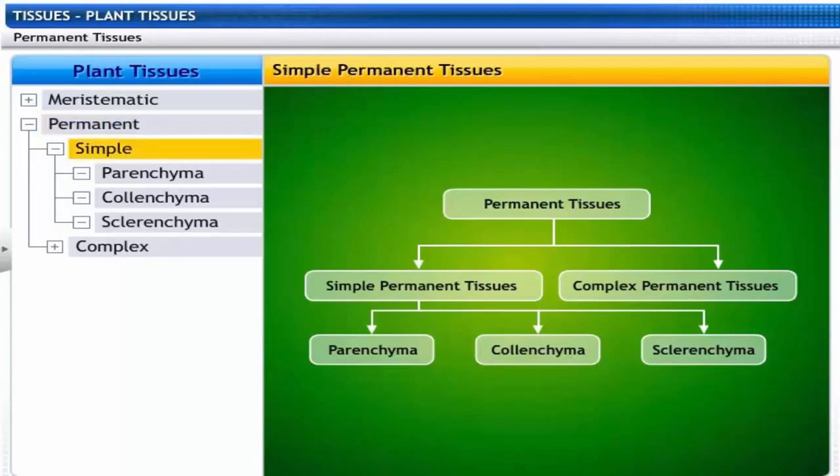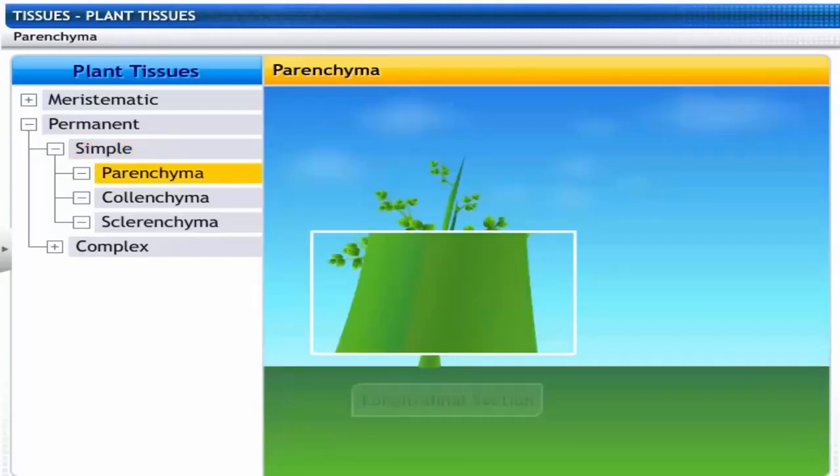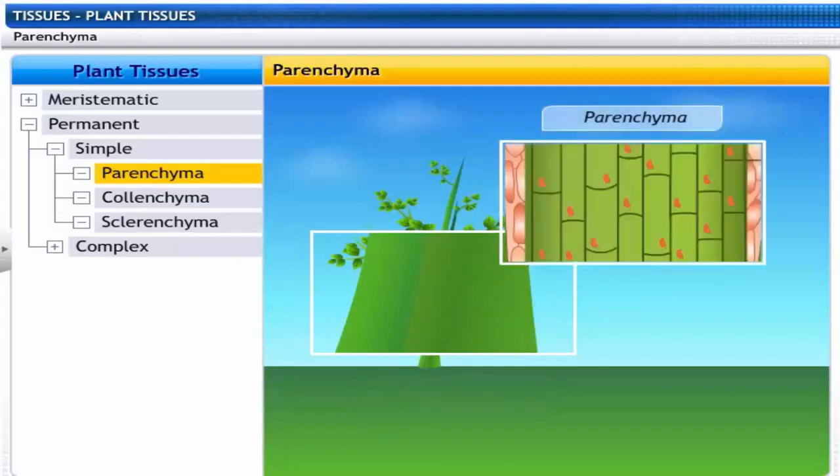Simple permanent tissues include parenchyma, collenchyma, and sclerenchyma. This is a stem. Let's explore the tissue parenchyma.